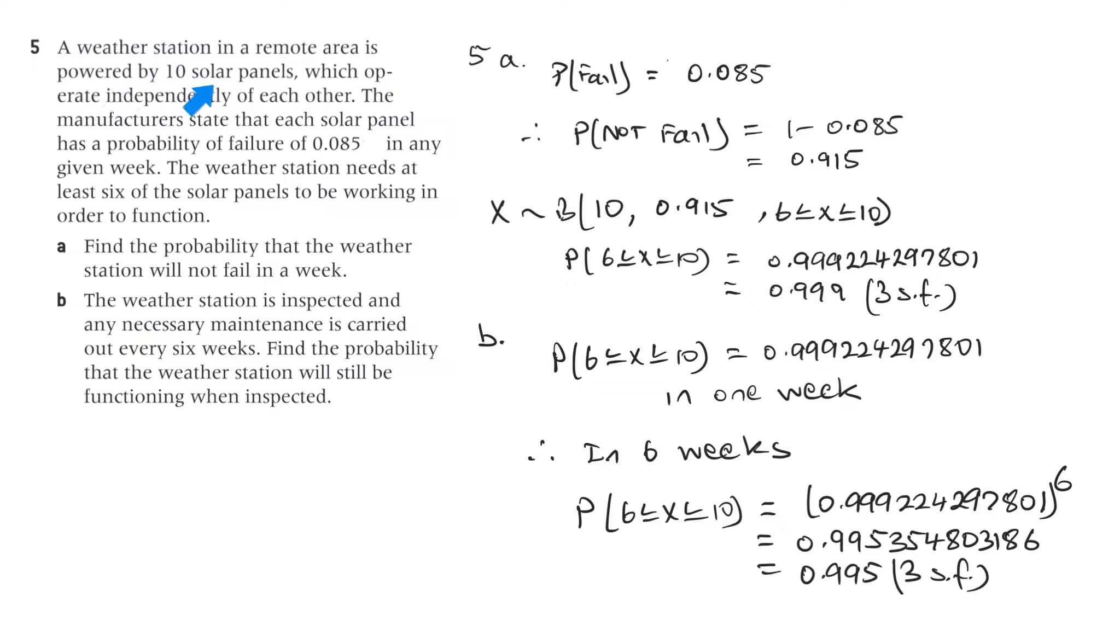A weather station in a remote area is powered by 10 solar panels which operate independently of each other. The manufacturers state that each solar panel has a probability of failure of 0.085. Now I've taken away that percent because it's incorrect. The question's wrong. The solution doesn't match the question, so we're changing the question. In any given week, the weather station needs at least six of the solar panels to be working in order to function. Part A: find the probability that the weather station will not fail in a week.